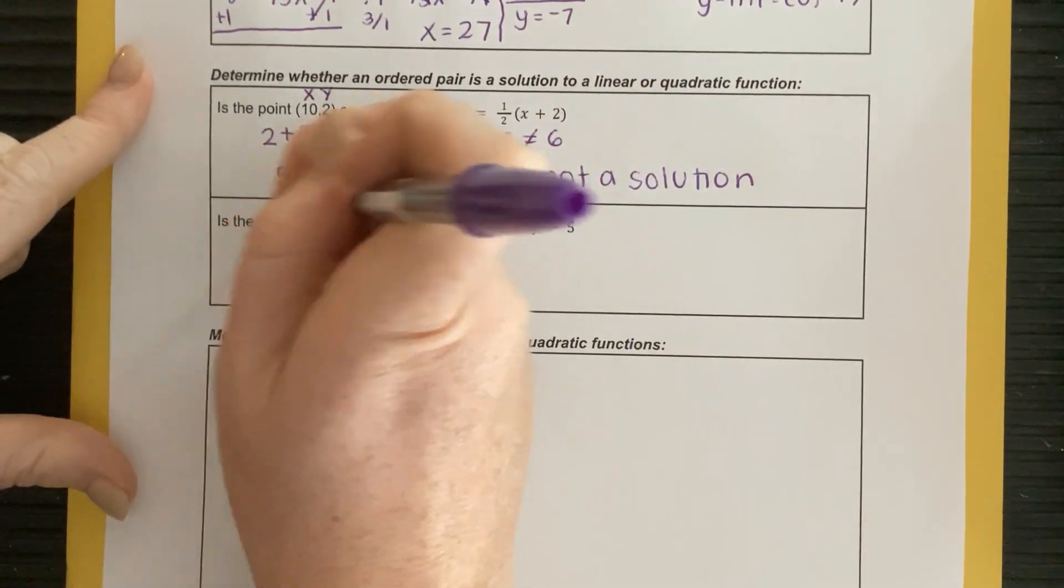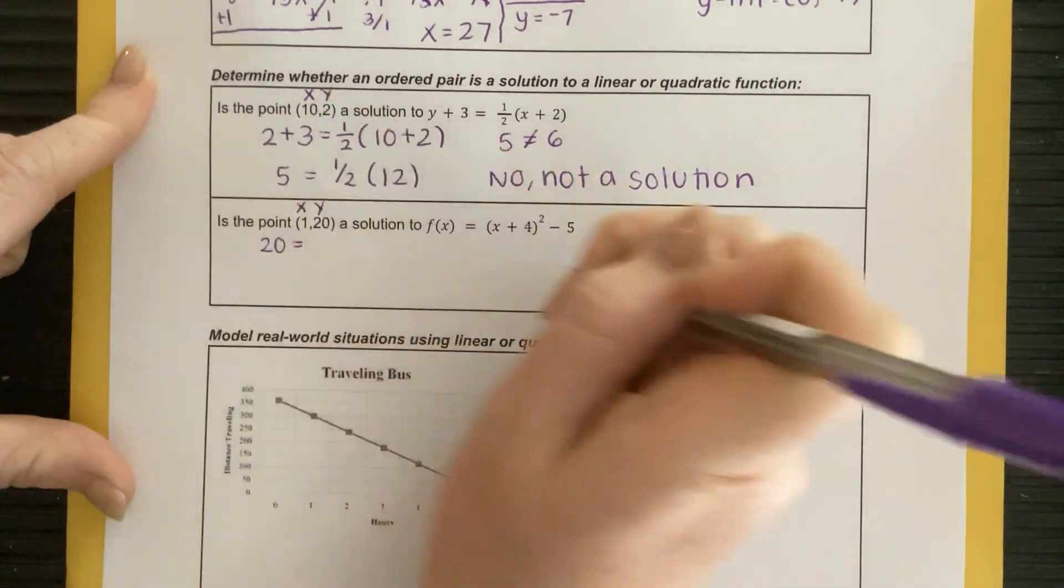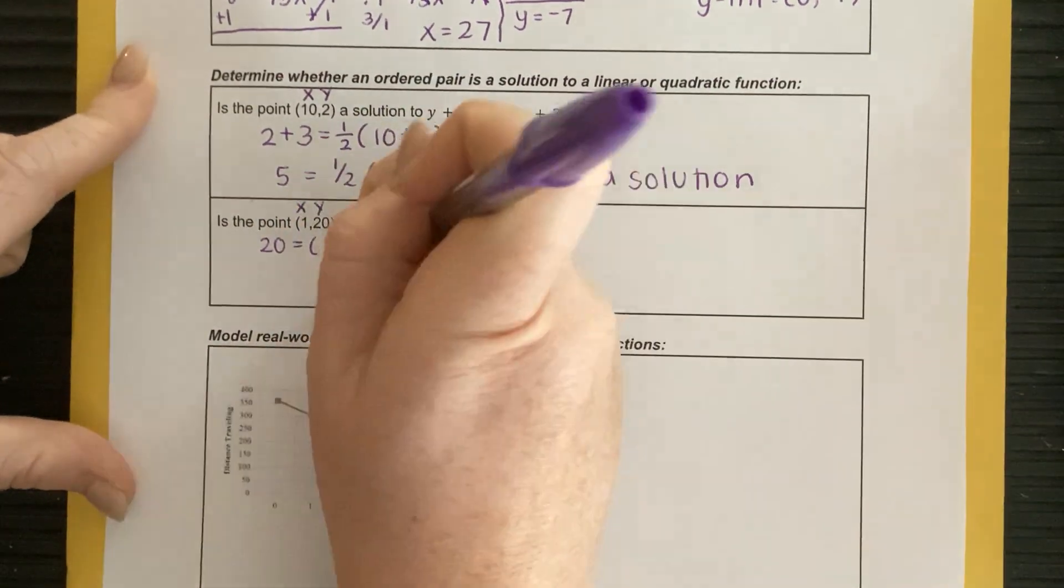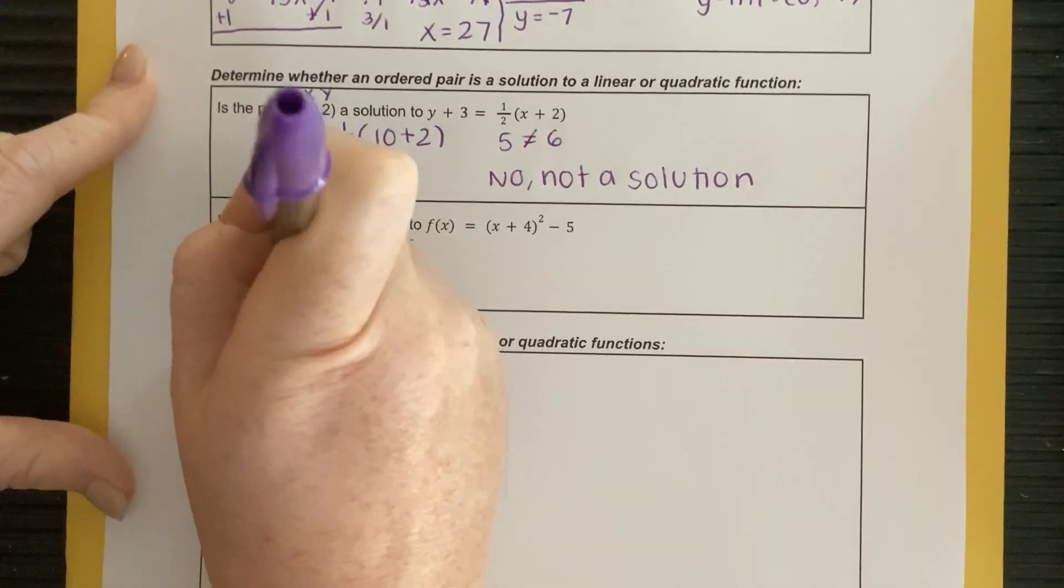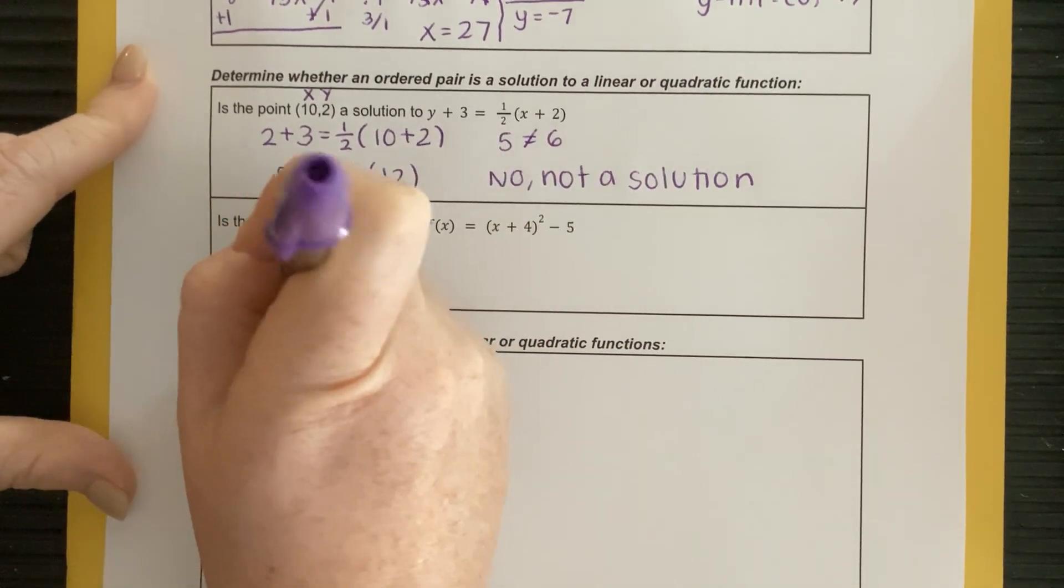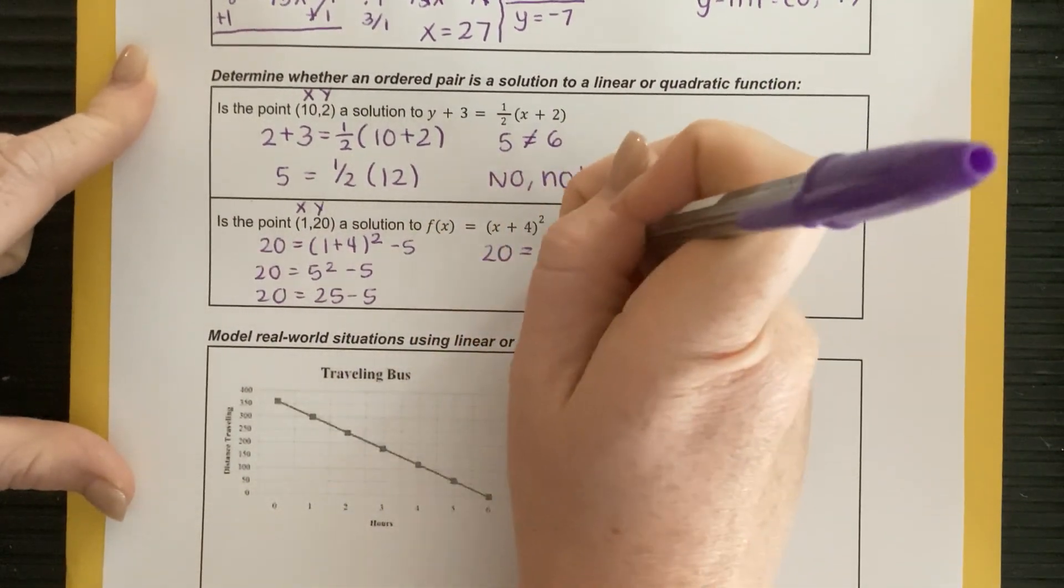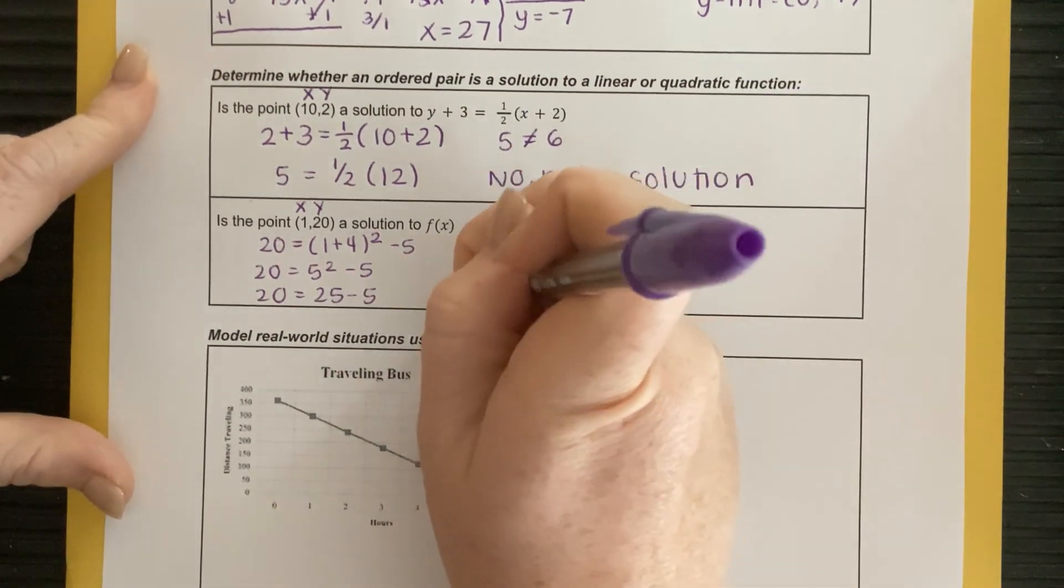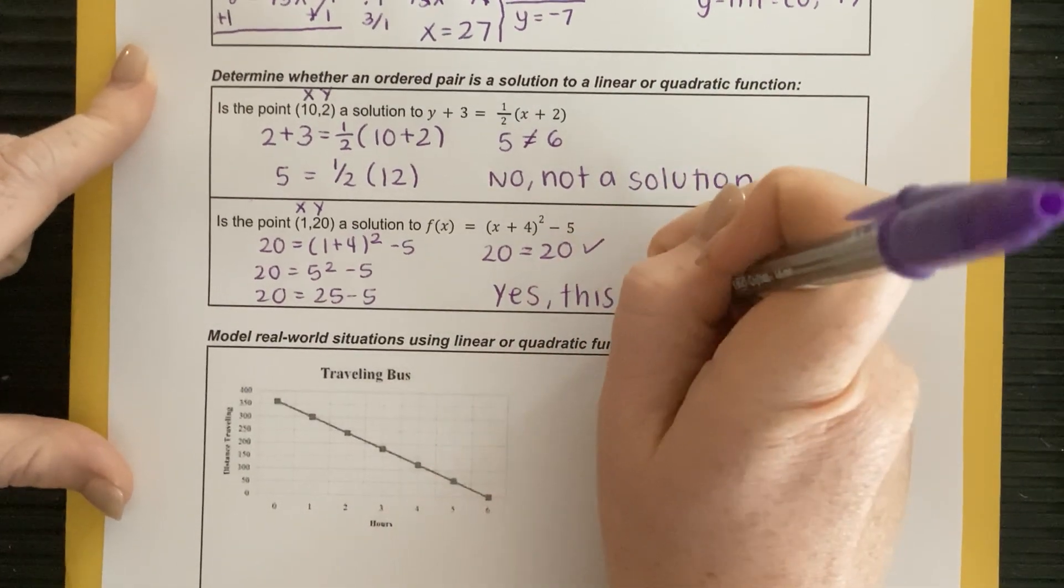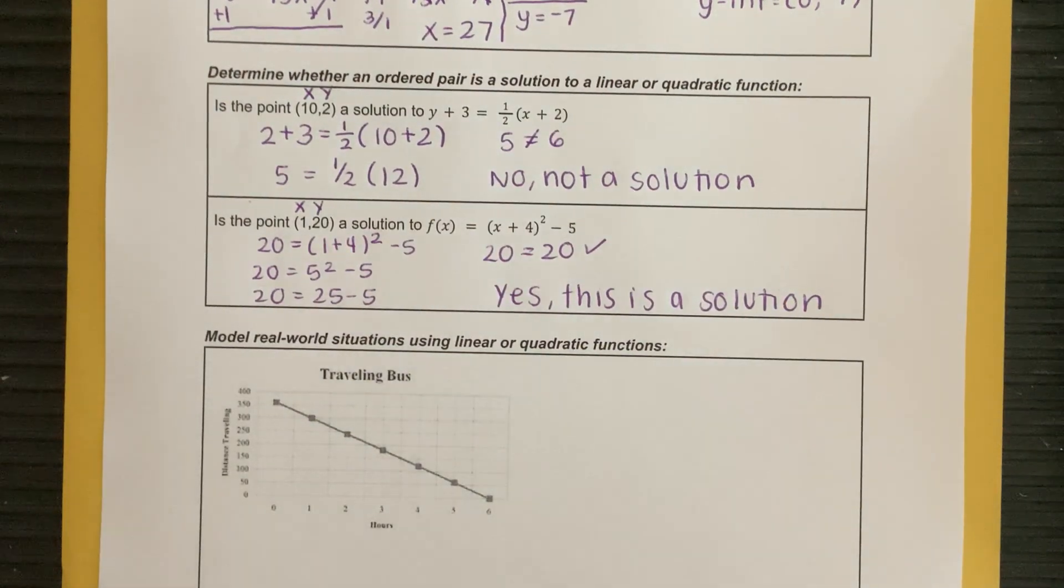That compared to if I did it here, again, this is my x, this is my y. So I'm going to say 20 is equal to 1 plus 4 squared minus 5. So 20 is equal to 5 squared minus 5. 20 is equal to 25 minus 5, which is giving us 20 equals 20. That is true. 20 does equal 20. All right. So yes, this is a solution. So true statement, a solution, not a true statement, not a solution.